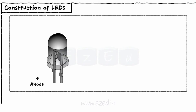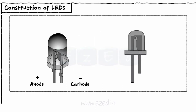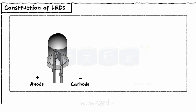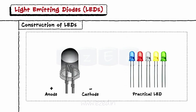To identify the anode and the cathode terminals of a LED, a special arrangement is made in the construction itself. If seen carefully inside the cup, we observe a cut between two metal strips. The small metal strip acts as an anode terminal and the big metal strip acts as a cathode. This is how a practical LED looks like.